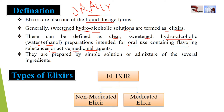These are called elixir preparations. They can be prepared as simple solutions or admixtures of several ingredients — both excipients and active medicinal agents — mixed together. This is about the introduction and definition of elixirs.